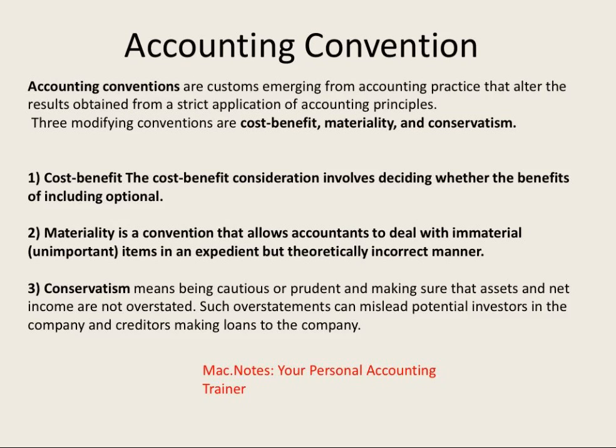Materiality is a convention that allows the accountant to deal with insignificant information in a practical manner. Conservatism means we're cautious or prudent in making sure that assets and net income are not overstated, because any overstatement can mislead potential investors. These are some of the common-sense rules that form the basis of accounting theory.